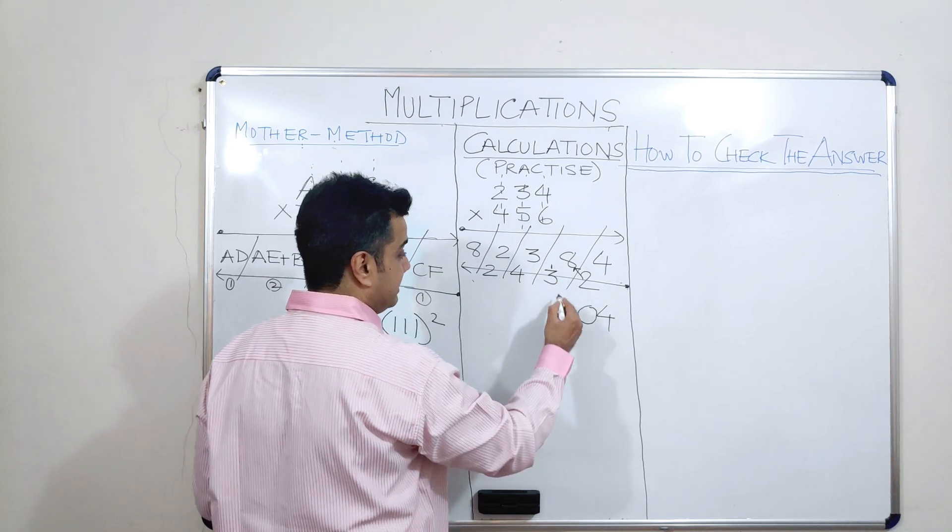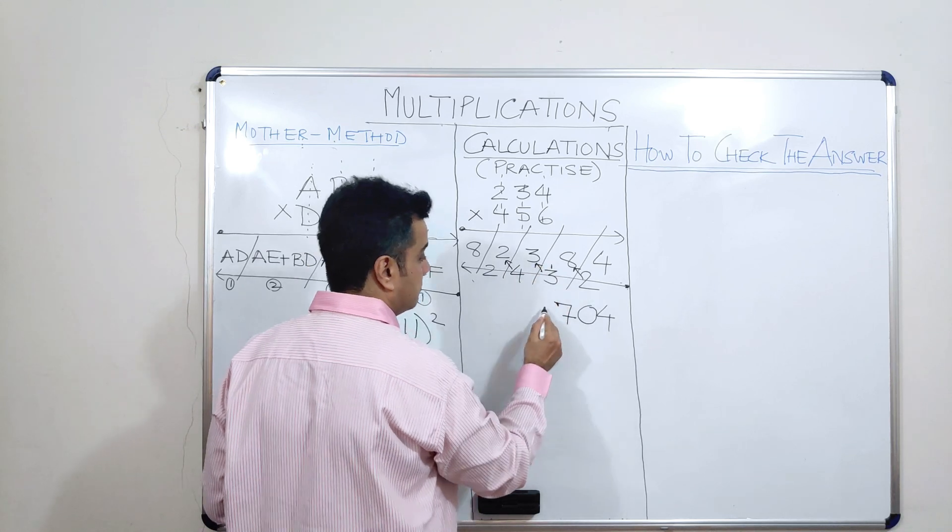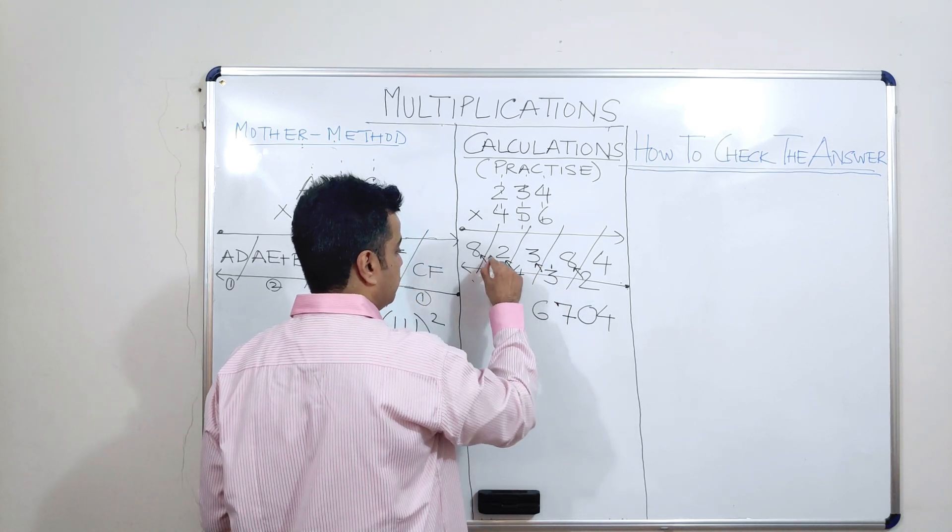So, now this becomes 4. 4 plus 3 is 7. 4 plus 2, 6. 8 plus 2, 10.